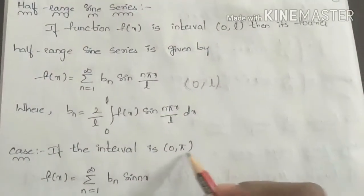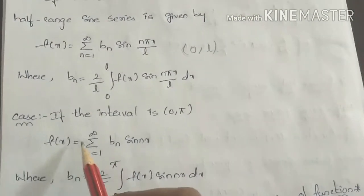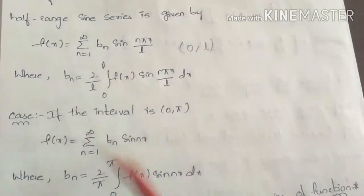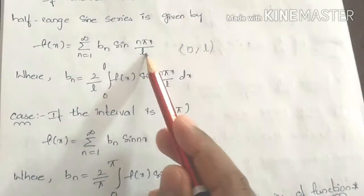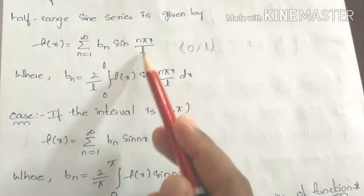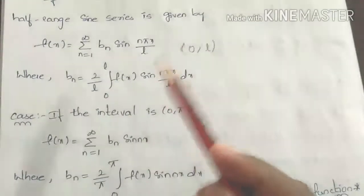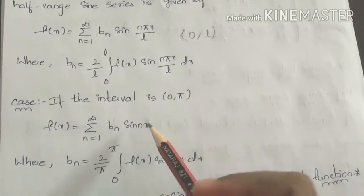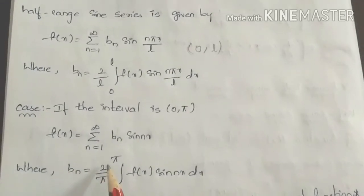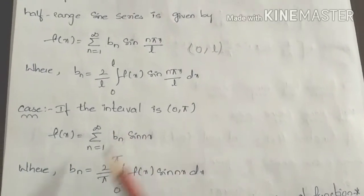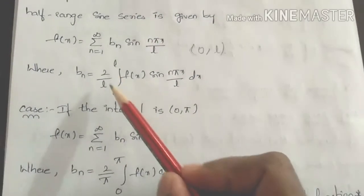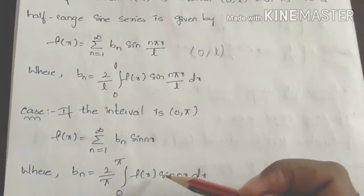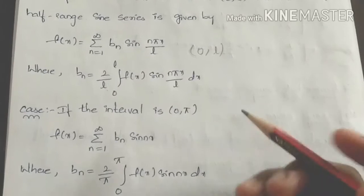For the interval 0 to pi, f of x equals summation n equals to 1 to infinity, bn sin(nx). Here, the interval 0 to l equals 0 to pi, so pi by l equals 1. The constant bn equals 2 by pi, integration 0 to pi, f of x sin(nx) dx.